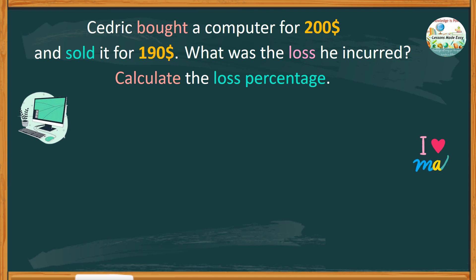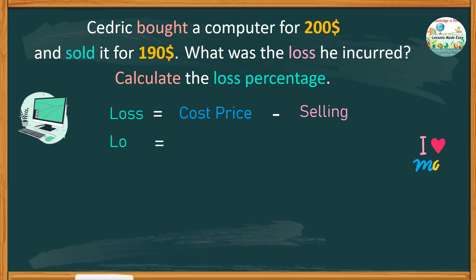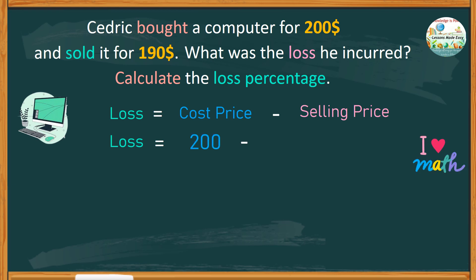To find the loss, take the cost price minus the selling price. So the cost price is $200 minus the selling price, which is $190, so the loss incurred is $10.